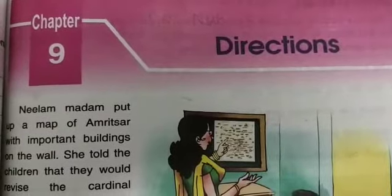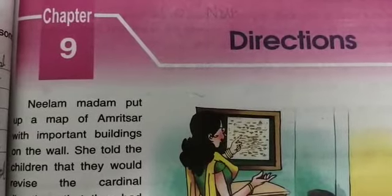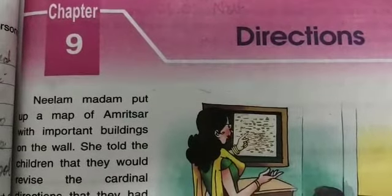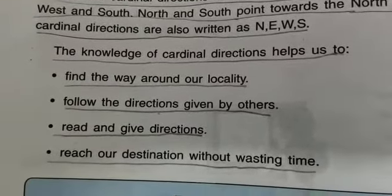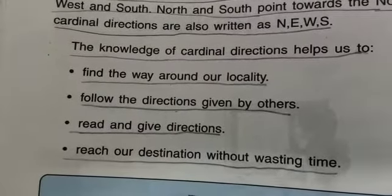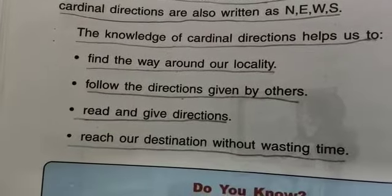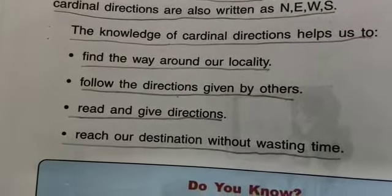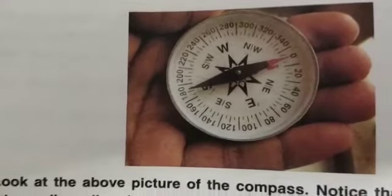Hello dear students, we are doing chapter 9 - Directions. As we know, there are four cardinal directions: North, East, West, and South, which point toward the North and South poles. A compass is an instrument that shows directions. The needle of a compass always points to the North, and from that we can locate all other directions.